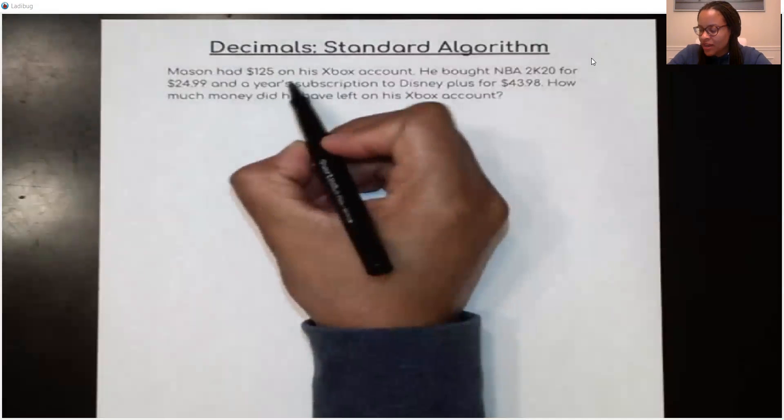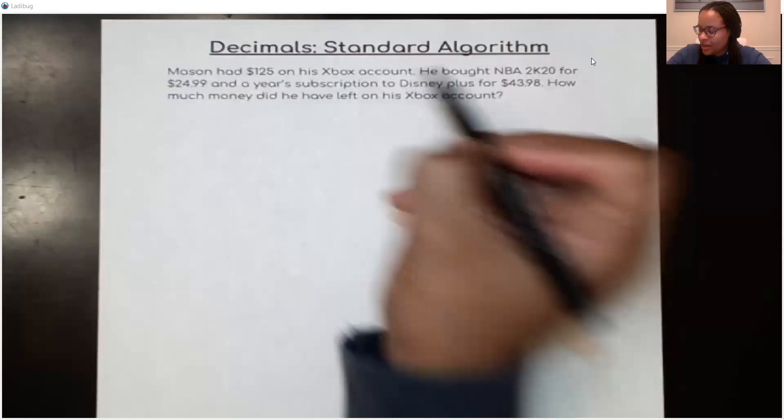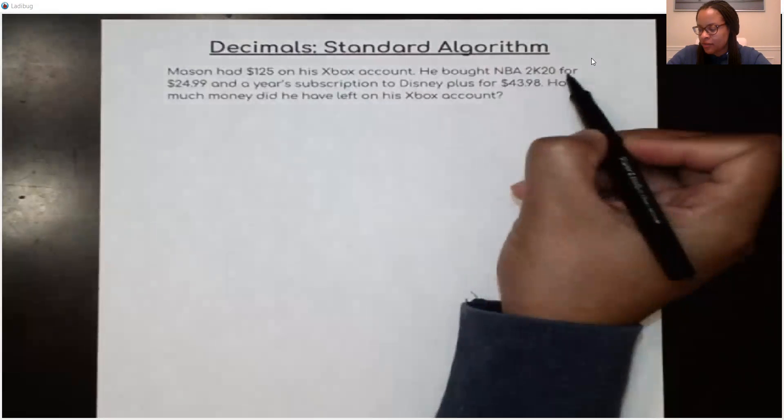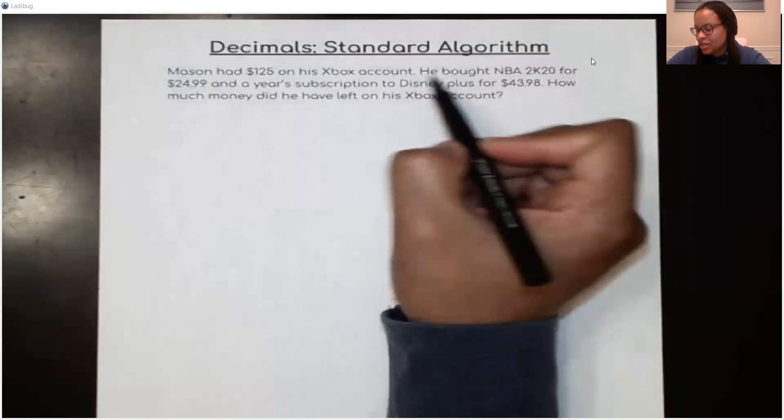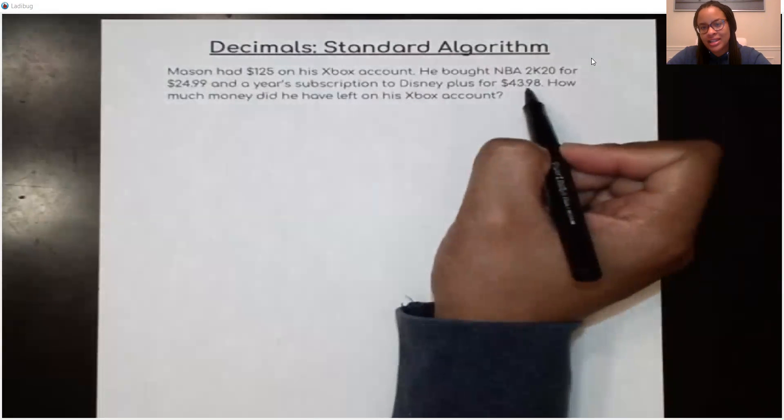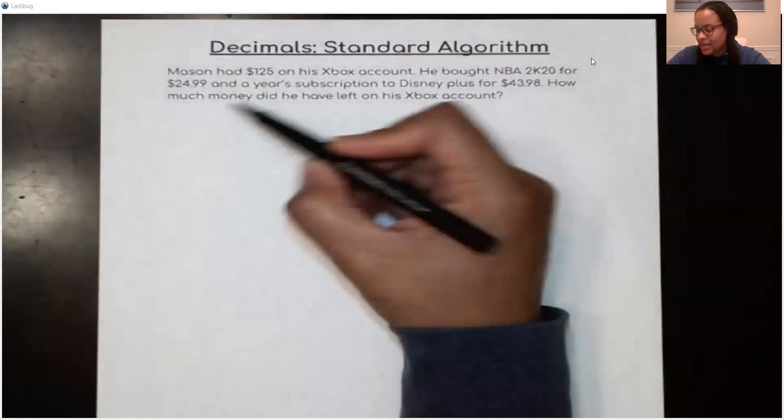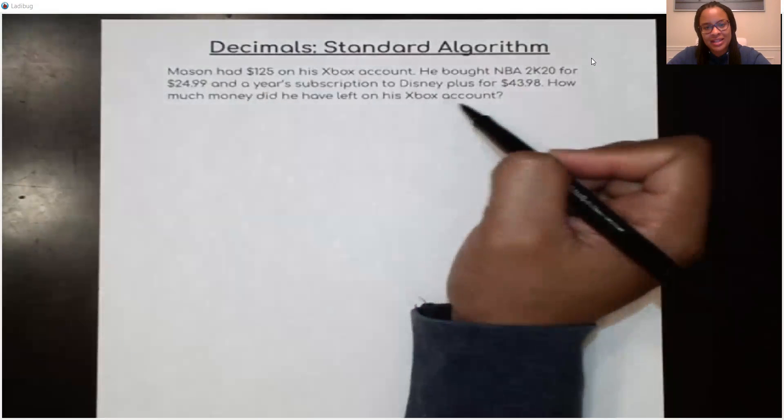Mason had $125 on his Xbox account. He bought NBA 2K20 for $24.99 and a year's subscription to Disney Plus for $43.98. How much money did he have left on his Xbox account?